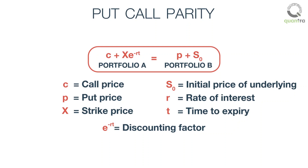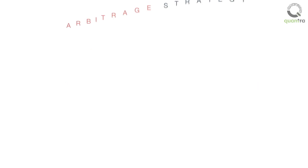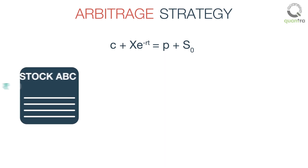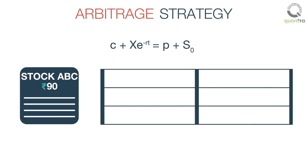As we know, if this equality is violated, there is an arbitrage opportunity. Let us understand this arbitrage strategy through an example. Suppose a stock ABC is trading at Rs.90. Let us construct two portfolios, A and B.